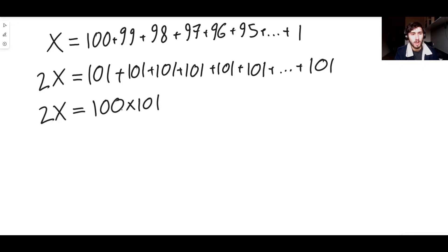All you've got to do now is rearrange and solve for x. So x is equal to 100 times 101 divided by 2, dividing both sides by 2. And that means that x is equal to 50 times 101, and that means that x must be equal to 5050.